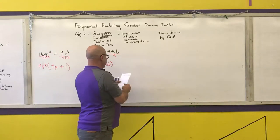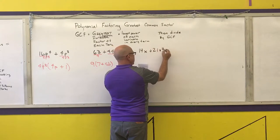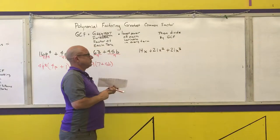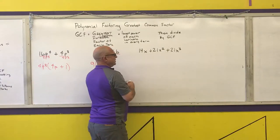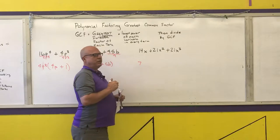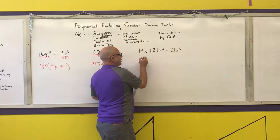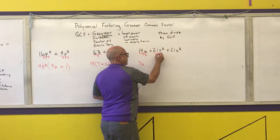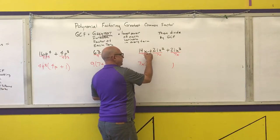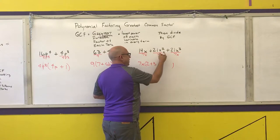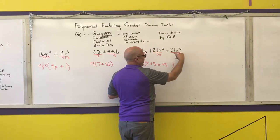Not only can I do this with binomials, I can do it with trinomials. Example: 14x + 21x² + 21x³. Step one: find the biggest integer factor of 14, 21, and 21 — that's 7. Step two: write the lowest power of every variable in every term; x appears in every term and the lowest power is x¹. Then divide by 7x: 14÷7=2 and x÷x=1; 21÷7=3 and x²÷x=x; 21÷7=3 and x³÷x=x². Result: 7x(2 + 3x + 3x²).